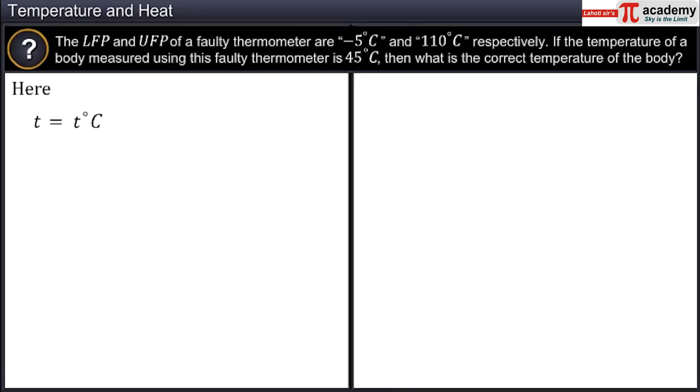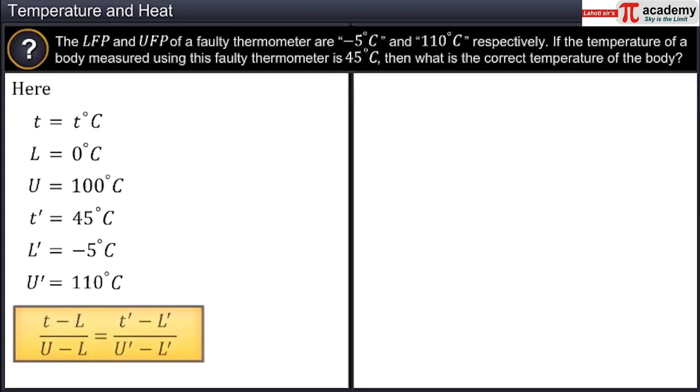Here, T equals T degrees Celsius, L equals 0 degrees Celsius, L dash equals minus 5 degrees Celsius, U dash equals 110 degrees Celsius. Upon substituting the values in the equations and solving, we find that the actual temperature is 43.5 degrees Celsius.